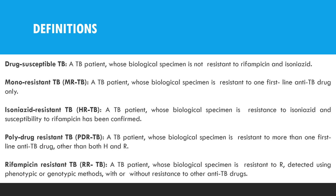Drug-sensitive TB refers to a TB patient whose biological specimen is not resistant to isoniazid and rifampicin. Mono-resistant tuberculosis is a patient whose biological specimen is resistant to one first-line anti-TB drug only. Isoniazid-resistant tuberculosis is a TB patient whose biological specimen is resistant to isoniazid and susceptible to rifampicin, as confirmed.